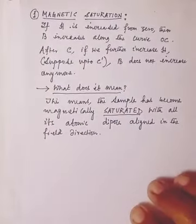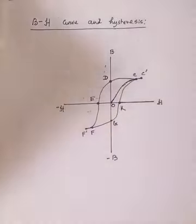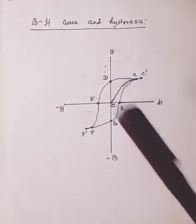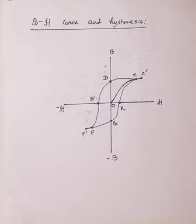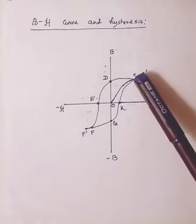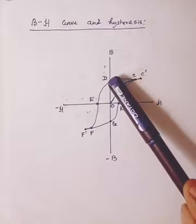Now let's go to the part CD of the curve. Now in this part what we are doing is we are gradually decreasing H from this particular value C to zero.